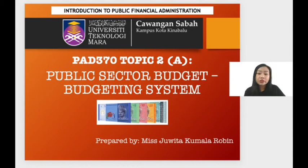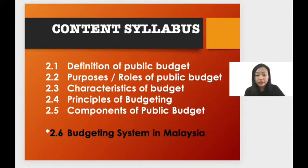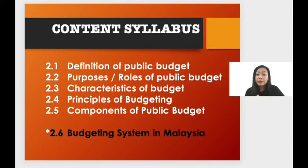Let's move on to the second topic or chapter, which is public sector budget or budgeting system. The syllabus includes the definition of public budget, purposes or roles of public budget, characteristics of budget, principles of budgeting, components of public budget, and the very important one — budgeting systems in Malaysia. For this chapter, you need to highlight the definition, the purposes or roles of public budget, the components, and also the budget systems existing in Malaysia.